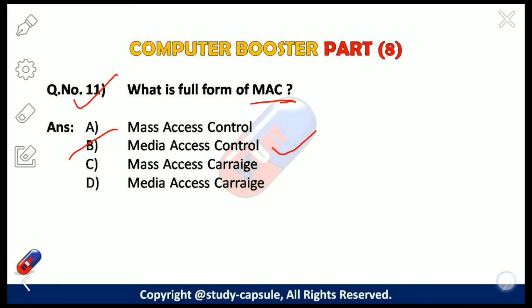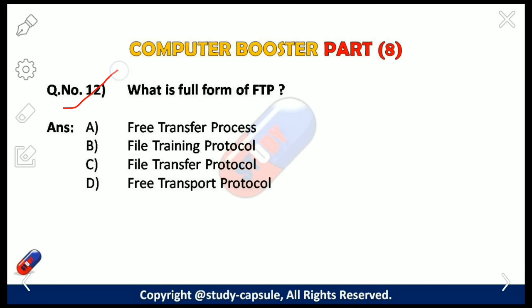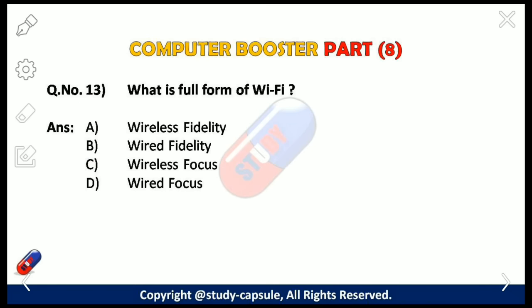Our twelfth question: what is the full form of FTP? The options are: A — Free Transfer Process, B — File Training Protocol, C — File Transfer Protocol, D — Free Transport Protocol. The answer is C — File Transfer Protocol.